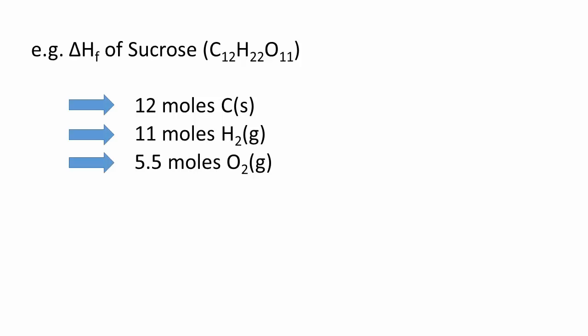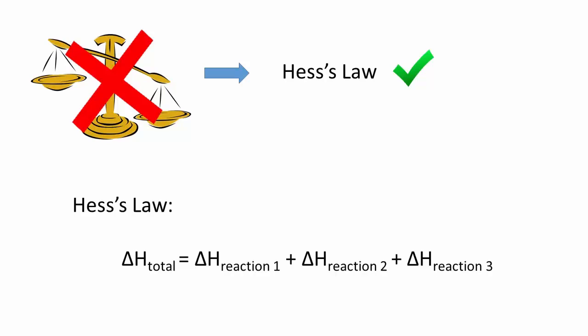Many times we can measure these changes in the lab directly from the reaction. However, often this is impossible. When this happens, one can make use of Hess's law, which states that a series of reactions will have the same overall enthalpy change as the direct reaction.